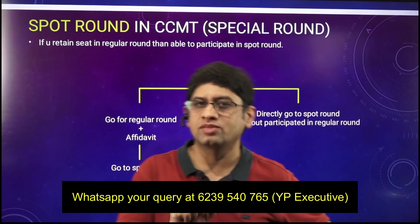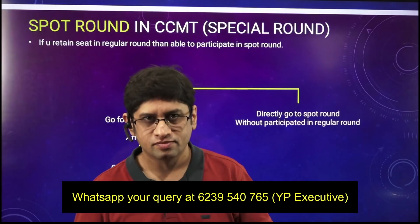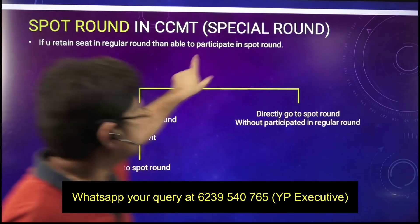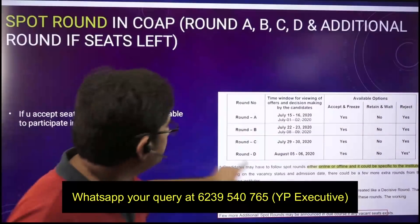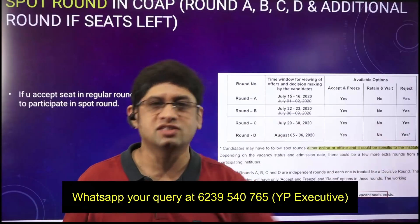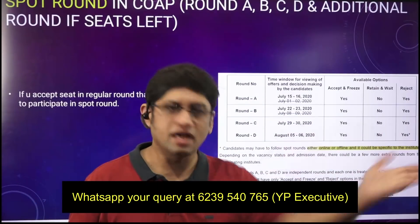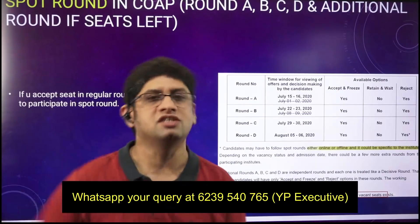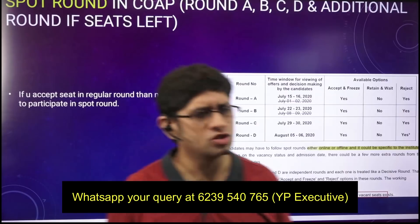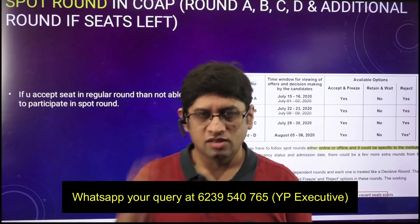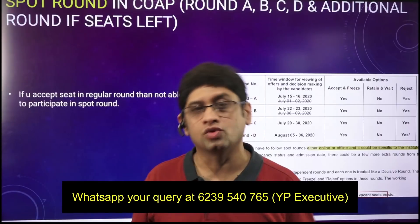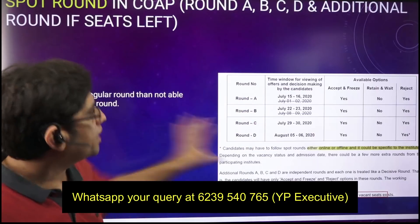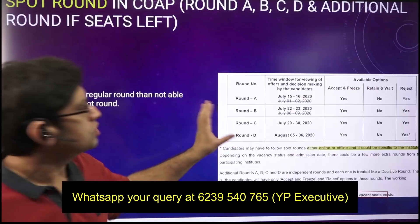To conclude: if you are not getting something really good in COAP and don't want it, then you can take the risk to go to rounds A, B, C, D — but you can go to those rounds only if you do not take anything in the previous rounds. Should we take that risk? You can take that risk if you are confident that you will get something in CCMT, because there are many students getting good NITs like Warangal, Trichy, Calicut, and Surathkal.